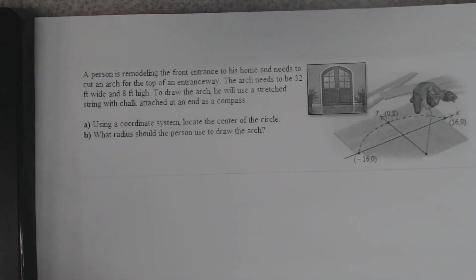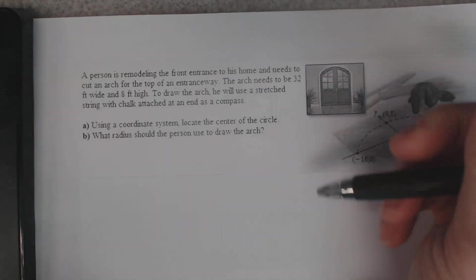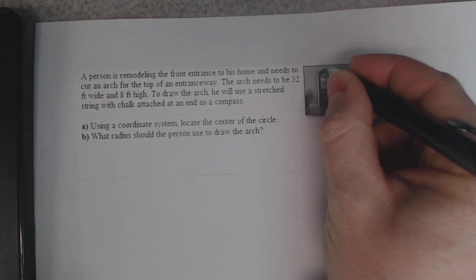Okay, you're supposed to be remodeling the front entrance to your home. You need to cut an arch for the top of the entrance way. The arch needs to be 32 feet wide and 8 feet high. To draw the arch, you must use a stretched string with chalk attached to the end, like a compass. So for some reason you're building a door that's 32 feet wide - that's ridiculous, but that's just what they do because you're trying to build this archway here.